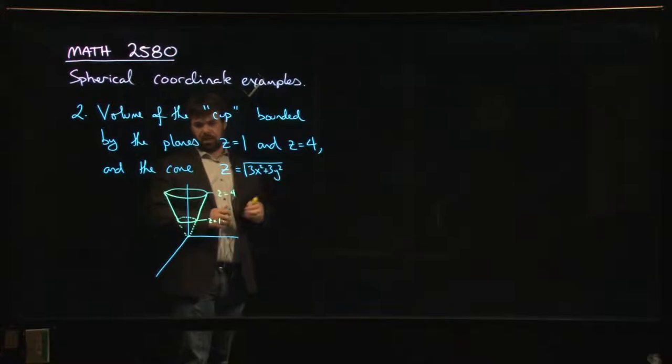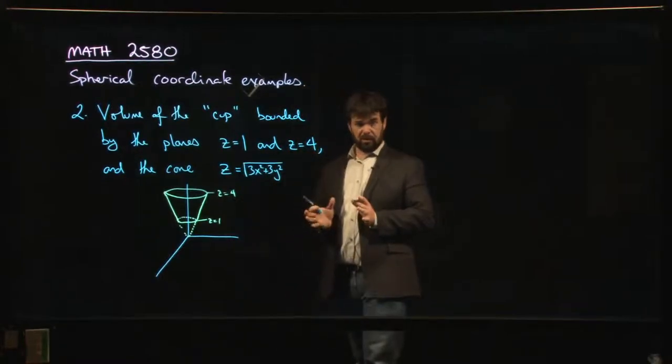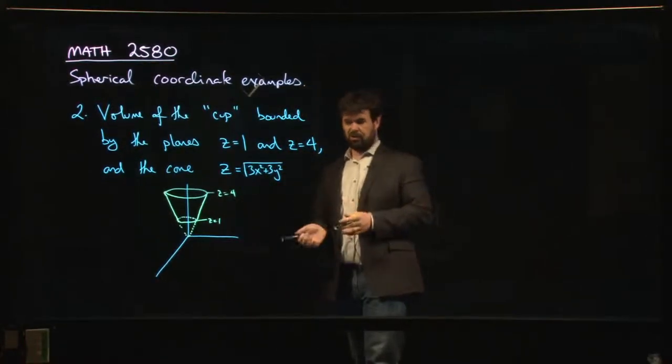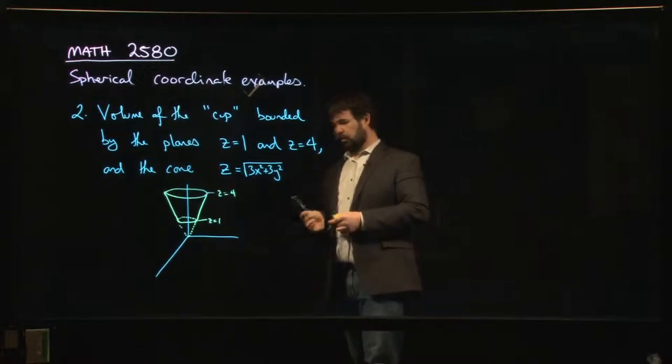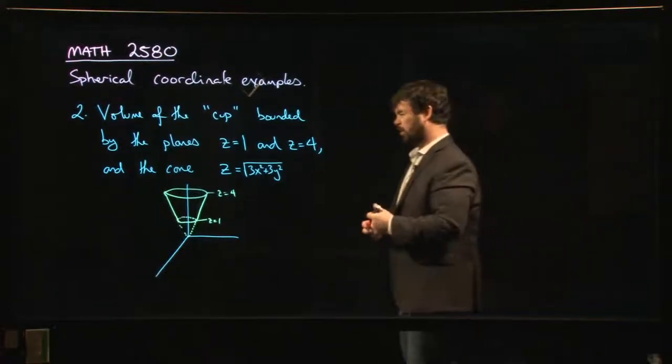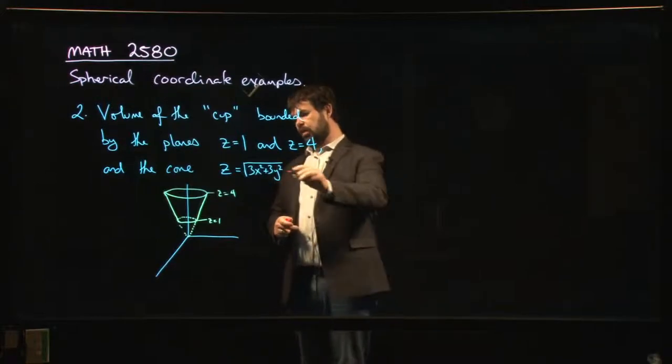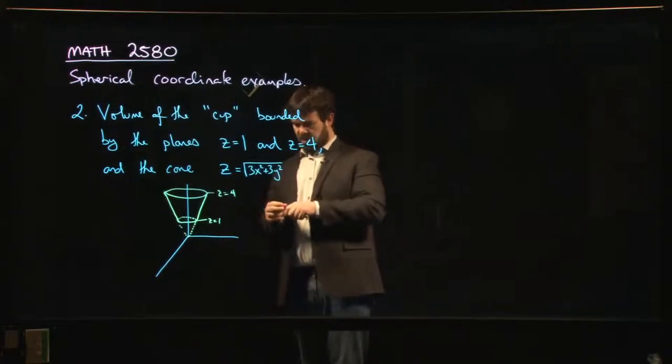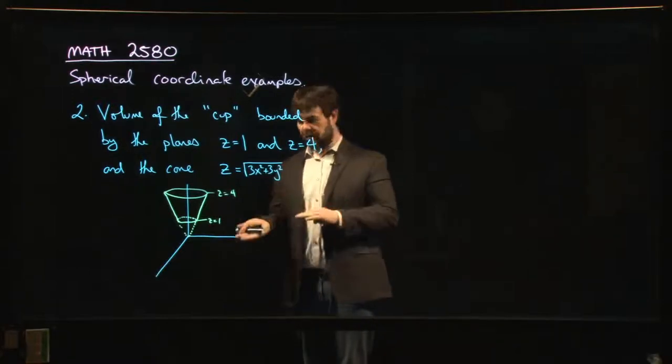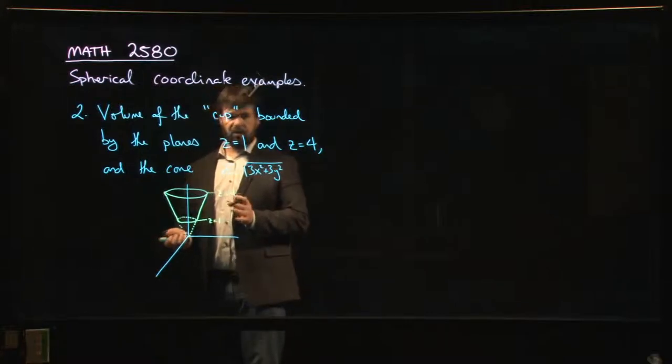Now, you might think that maybe this should be cylindrical coordinates, right? You have to think about this. Should this be cylindrical? Should it be spherical? Let's think about how this looks in cylindrical coordinates and then realize that maybe we should give spherical a shot after all. The thing about cones is that they're easy to describe in both spherical and cylindrical coordinates. These horizontal planes are a little bit easier in cylindrical, which is why you might think cylindrical first.